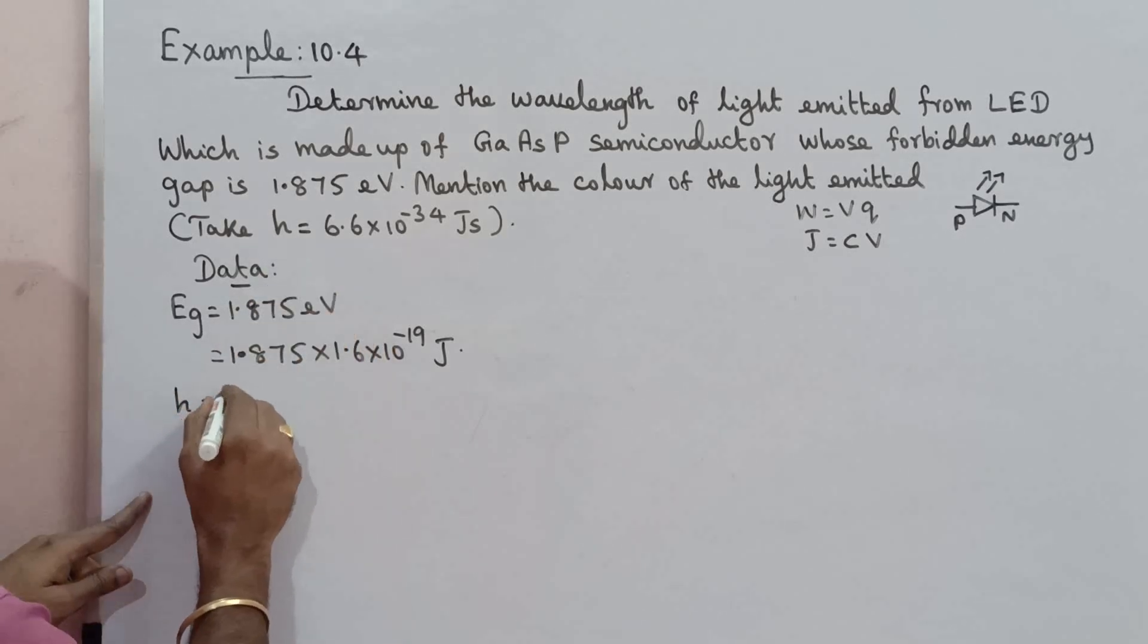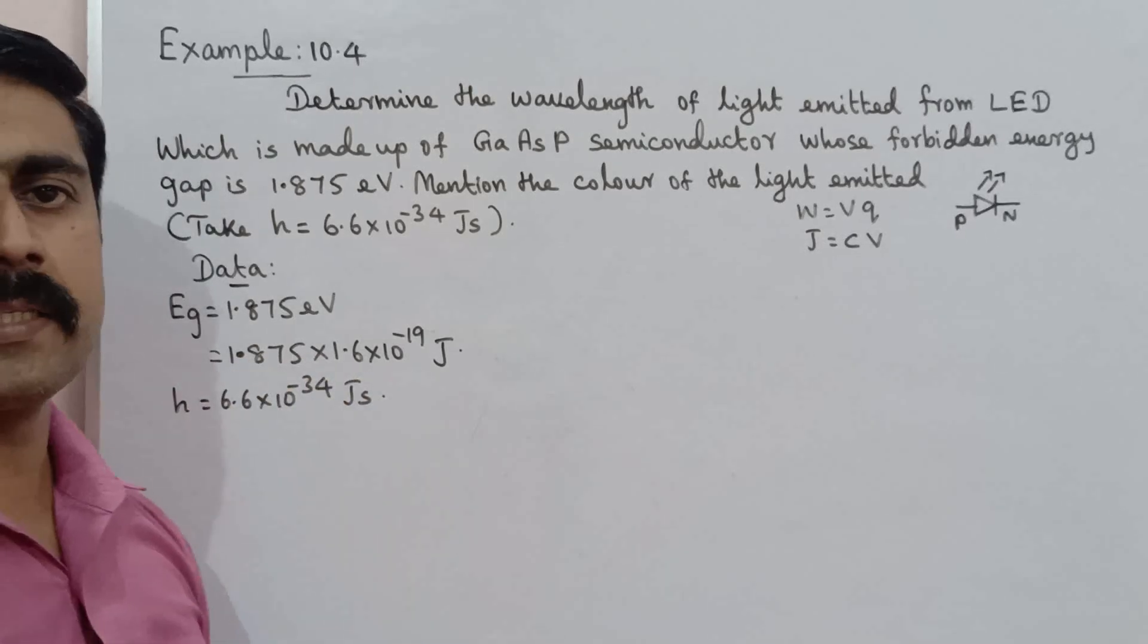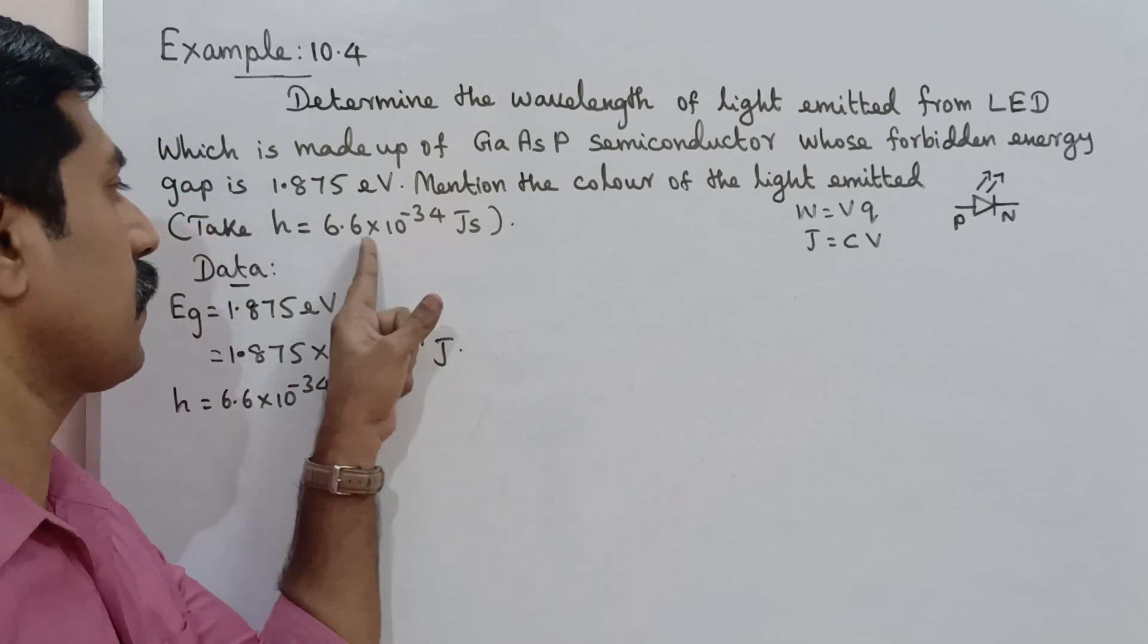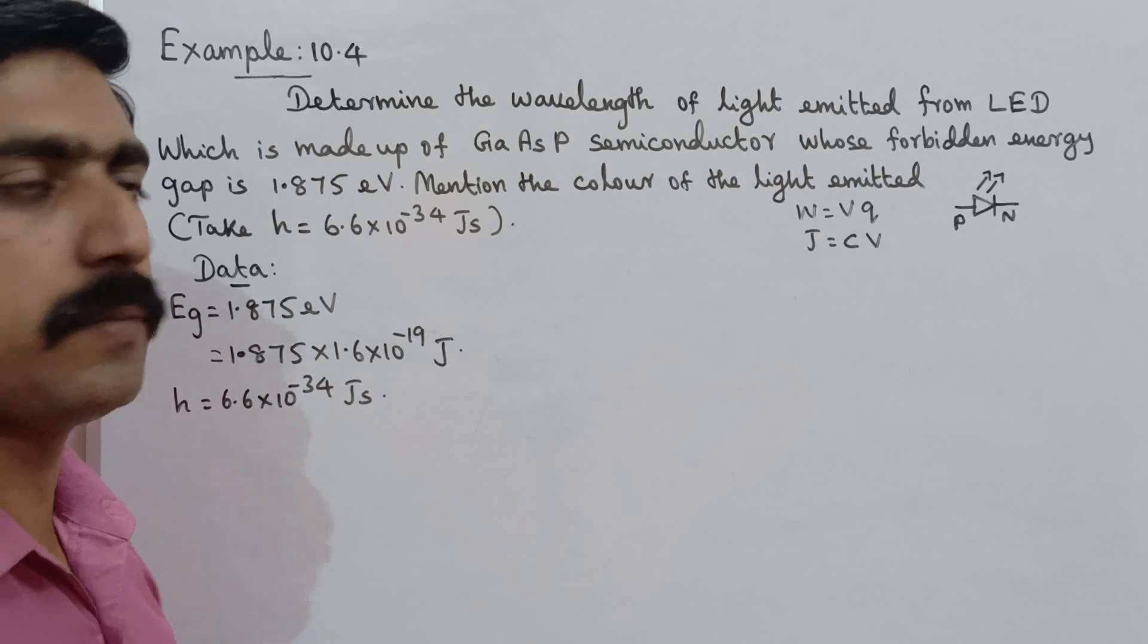H is Planck's constant, 6.6 into 10 power minus 34 joule second. Actually the Planck's constant value is 6.626, but for simple calculation purposes we round it off.